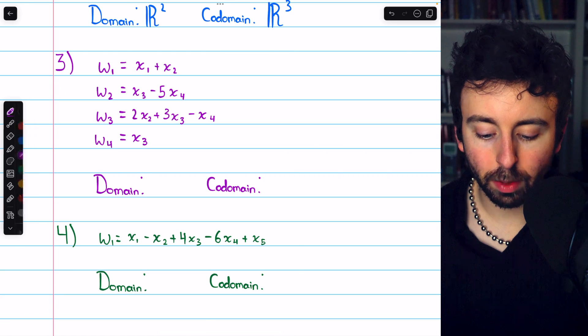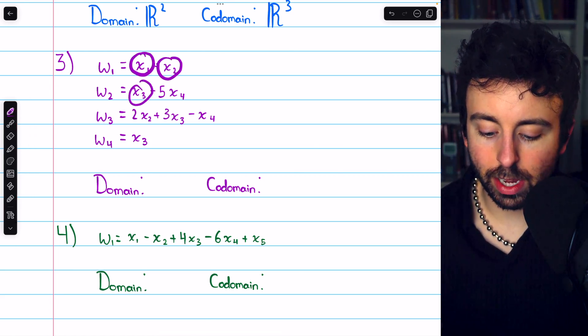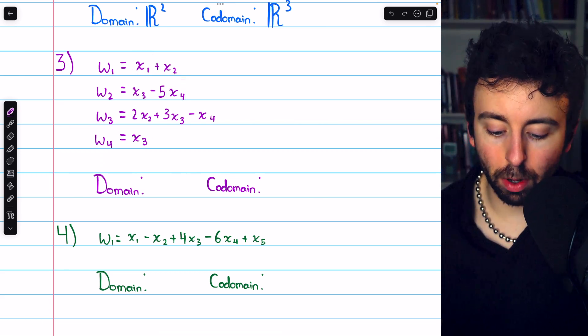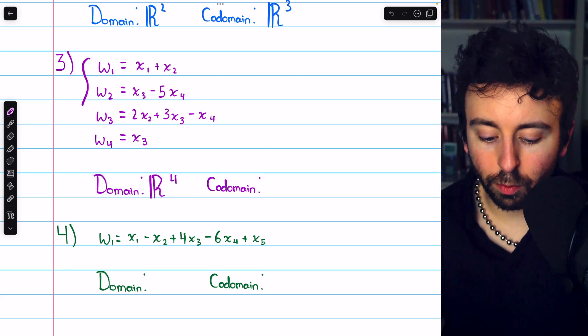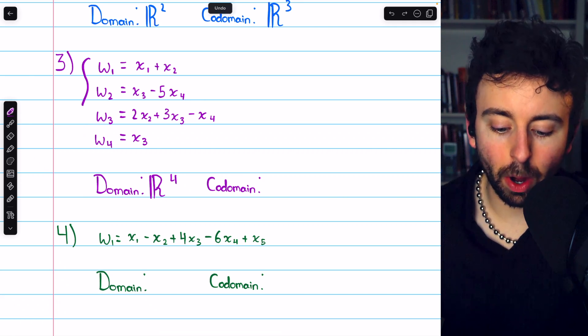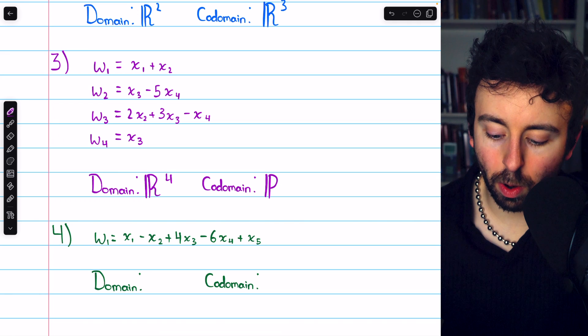Then looking at problem three, we have, let's see, x₁, x₂, x₃, x₄, and that appears to be it. So there are four input variables. Hence, the domain is R⁴. We also have four equations, one equation describing how to calculate each component based on the input variables. So the codomain is also R⁴.